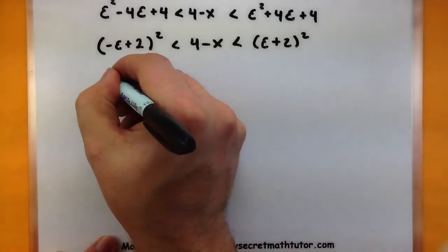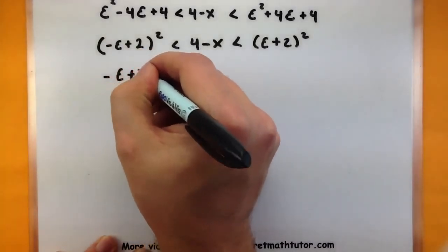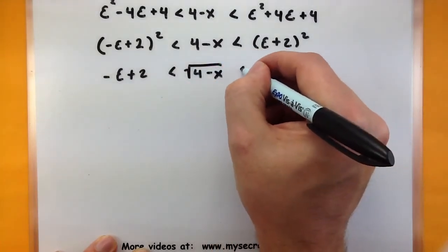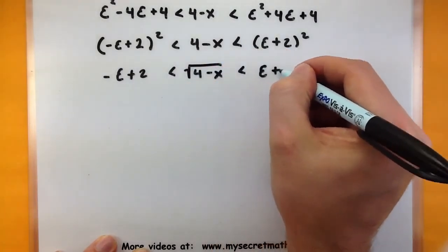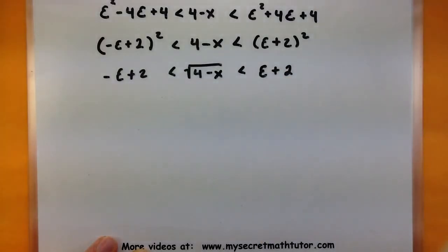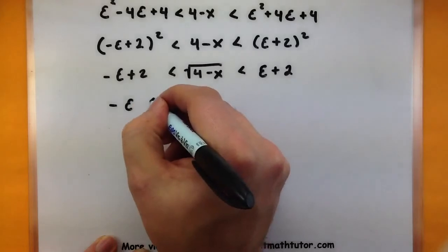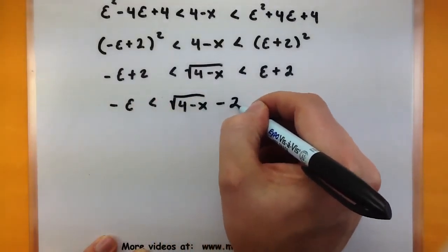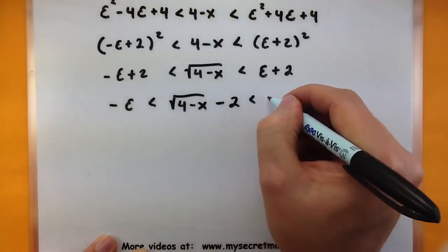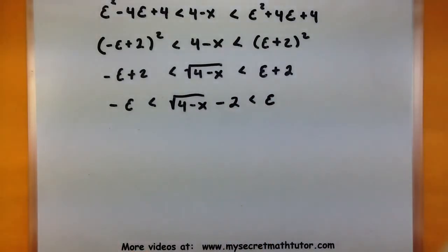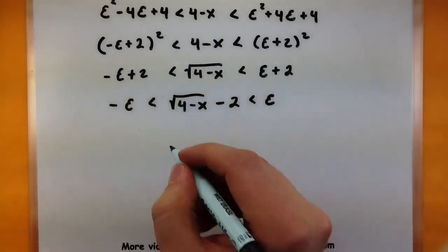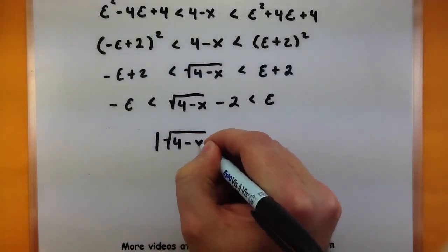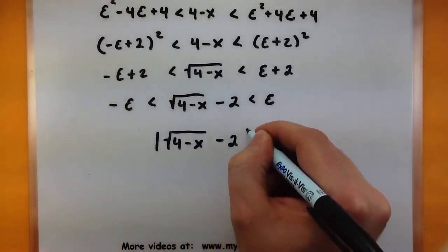Taking the square root of both sides, you can see we've built our function there. And now minus two from everything. Looking great. So I have a negative epsilon and an epsilon. Package this guy into our absolute value.